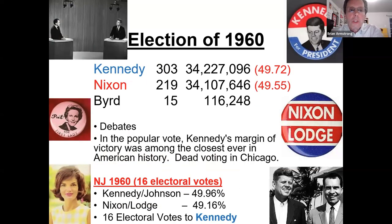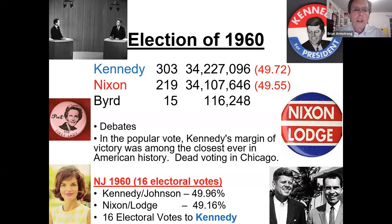The 1960 election strikes me as having much relevance to this year with the debate issue. Kennedy and Nixon debated for the first time — anyone who listened on radio said Nixon was the winner, anyone who watched on TV said Kennedy was the winner, which helped Kennedy edge up. This was an incredibly close election. It came down to claims that Kennedy may have had deals in Chicago — dead people voting. Nixon went to Eisenhower asking what to do, and Eisenhower said 'For the good of the country, let it go — there's nothing you can prove.' Nixon ended up letting it go and eventually ran again later. New Jersey went slightly for Kennedy — 49% to 49% — and Kennedy got the 16 electoral votes.